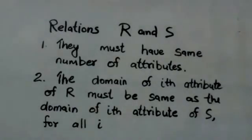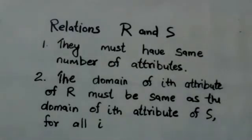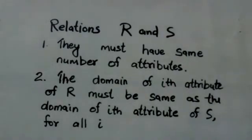Suppose there are two relations R and S. The union operation can be applied on these two relations if they satisfy two conditions. First, they must have the same number of attributes. Second, the domain of the ith attribute of relation R and the domain of the ith attribute of relation S must be the same for all i. This means the domain of the first attribute of R must match the first attribute of S, the second attribute of R must match the second attribute of S, and so on.